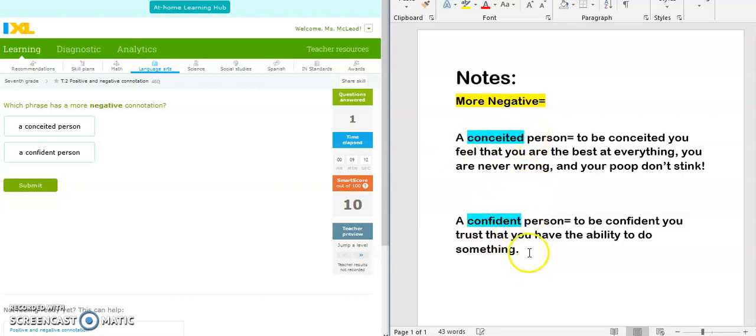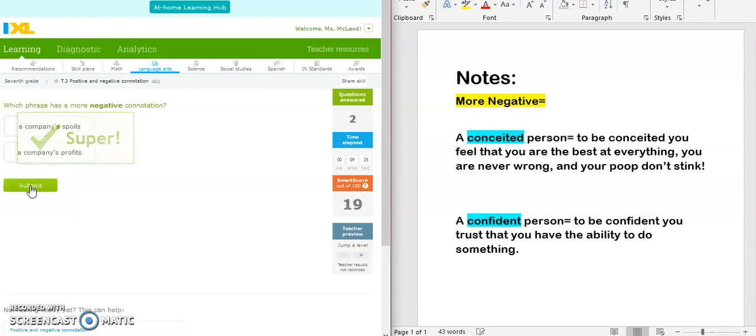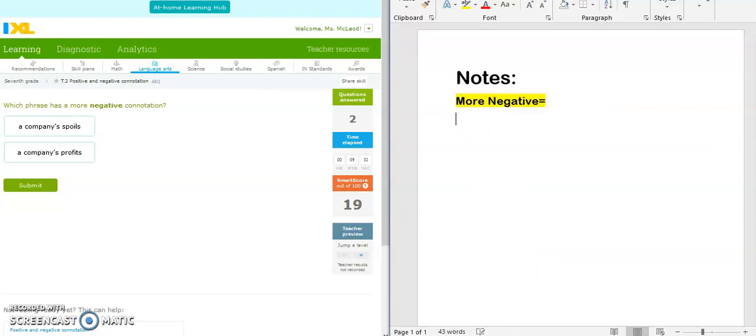So I have a confident person and a conceited person. Definitely, between confident, doesn't really make me feel negative. But a conceited person, that is definitely something I don't want to be. So I'm going to pick a conceited person. Look at that. We're going to erase our notes. We're going to do one more.